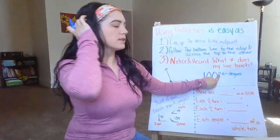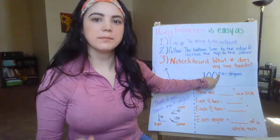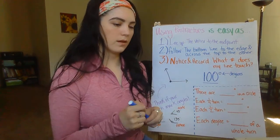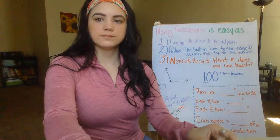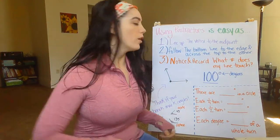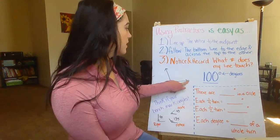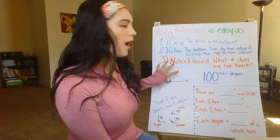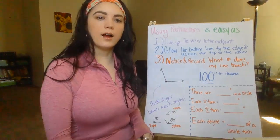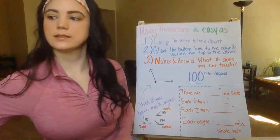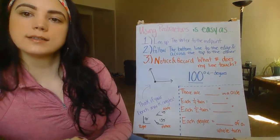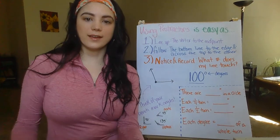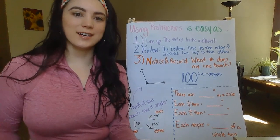This little circle raised in the air means degrees. Now, talking about how you could understand that this is 100 degrees without actually having a protractor.